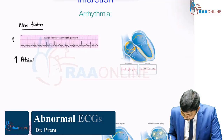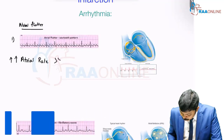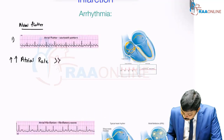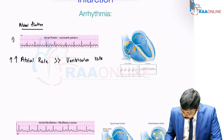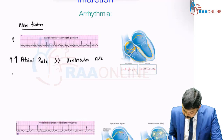Atrial rate is going to be far too much than ventricular rate. Number two, the P-waves.